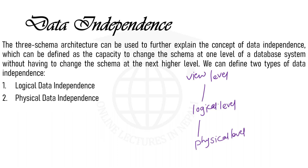The concept of data independence: data independence is the capacity to change the data schema at a lower level without affecting the higher level. The three-schema architecture can be used to further explain the concept of data independence, which can be defined as the capacity to change the schema at one level of a database system without having to change the schema at the next higher level.